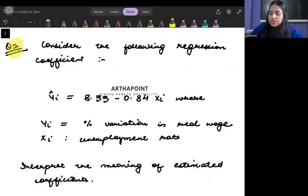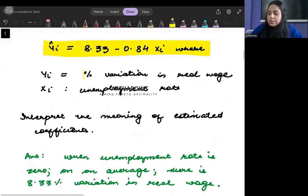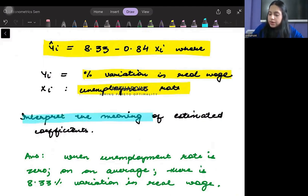Let's look into question number two. Consider the following regression coefficients. You are given yi hat equals 8.33 minus 0.84 xi, where yi is percentage variation in the real wage and xi is unemployment rate, and you need to interpret the meaning of the estimated coefficients.